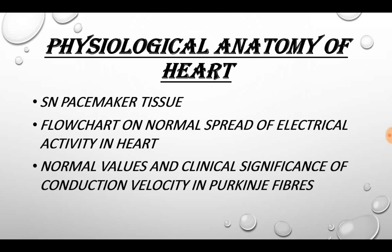The various questions asked from this chapter are: short note on the Pacemaker, flow chart on normal spread of electrical activity in the heart, and normal values and clinical significance of conduction velocity and Purkinje fibers. The last question — normal values and clinical significance of conduction velocity and Purkinje fibers — is important. The rest two are not that important.